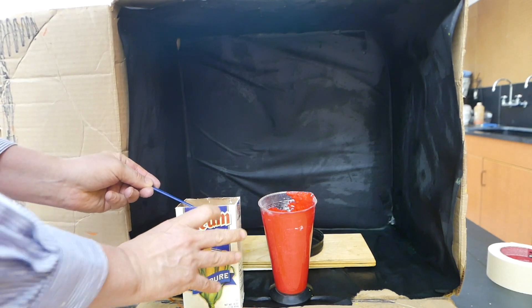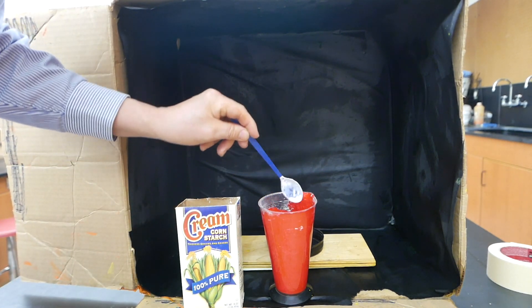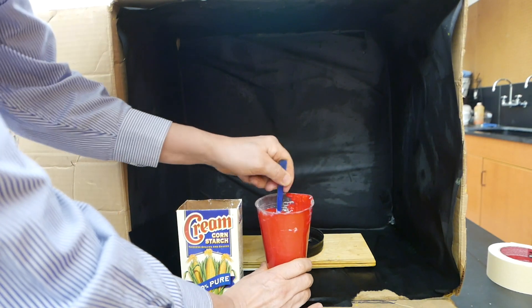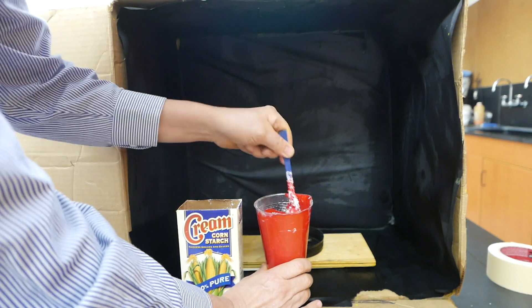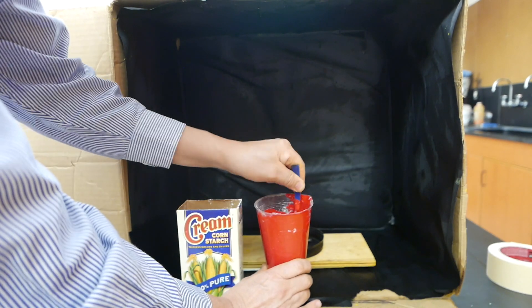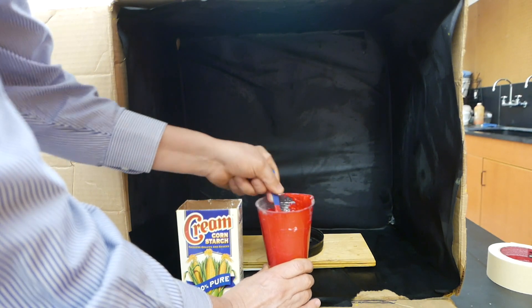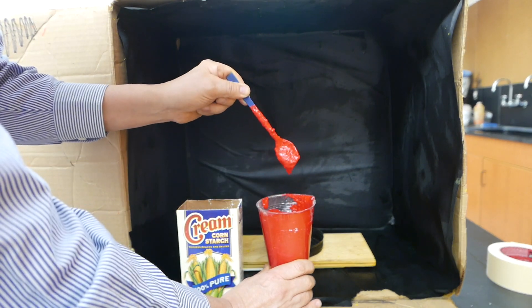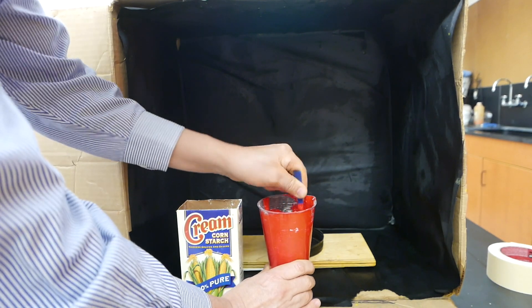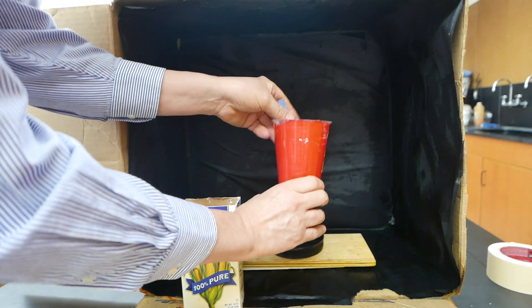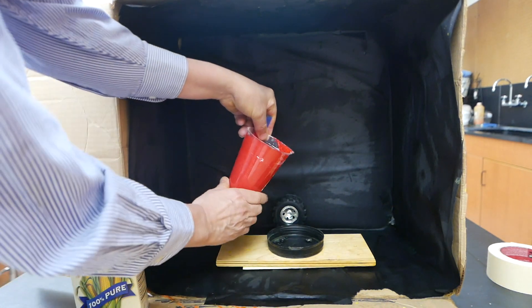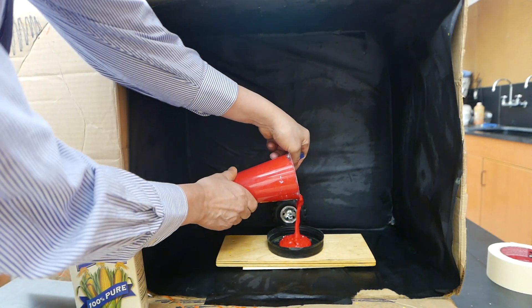In this case I'm going to add some cornstarch to it. That should thicken it up quite a bit. I'll try and get it closer to the consistency of mud. This feels pretty good. Stir it up a little bit more here and then we'll pour it into that little cup and try it again.